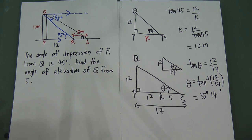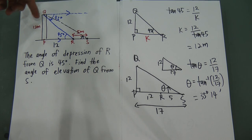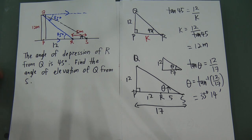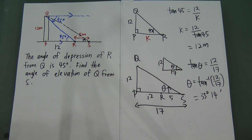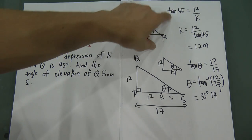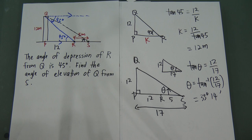Elevation means from the bottom looking up; depression means from the top horizontal line looking down. If you know the Z-angle effect, it is very helpful. Most of the time you will use tangent to solve these problems, because most of the time you only have opposite and adjacent. Sine and cosine can be used too, but tangent is most common. Just make sure you remember tangent = opposite divided by adjacent, and solve the equation carefully. This chapter will be very easy for you. Thanks for watching.